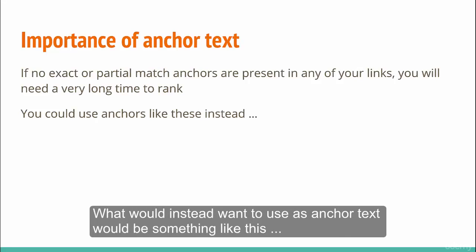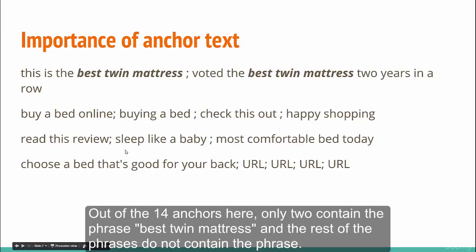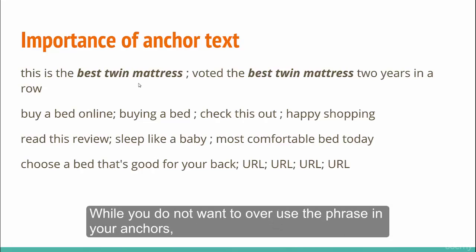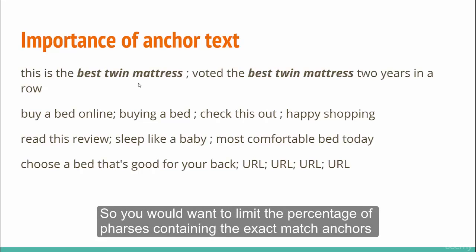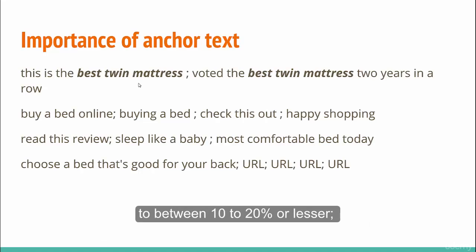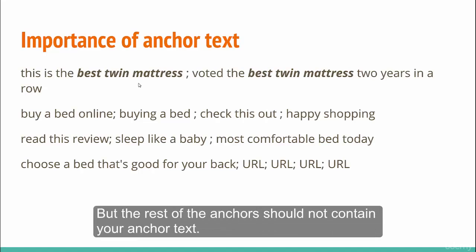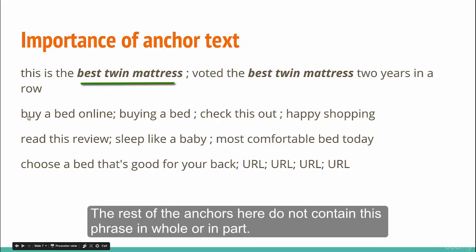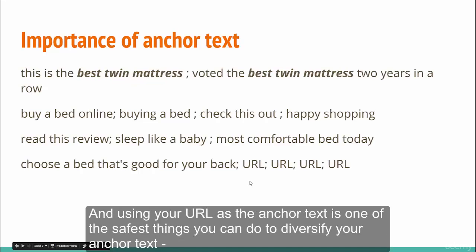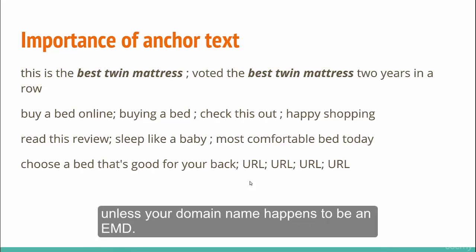What you would instead want to use as anchor text would be something like this. Out of the 14 anchors here, only two contain the phrase 'best twin mattress' and the rest do not. While you do not want to overuse the phrase in your anchors, avoiding it completely is not good either. You would want to limit the percentage of exact match anchors to between 10 to 20 percent or lesser, and the rest of the anchors should not contain your target phrase. Using your URL as anchor text is one of the safest things you can do to diversify your anchor text, unless your domain name happens to be an EMD.